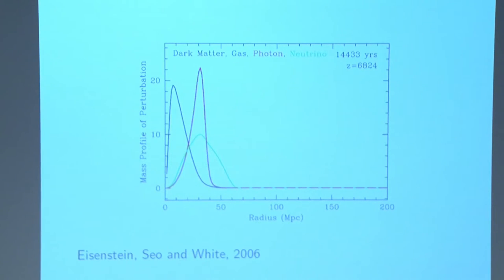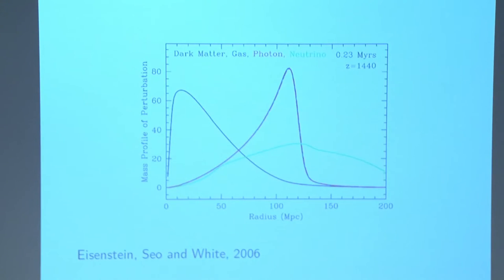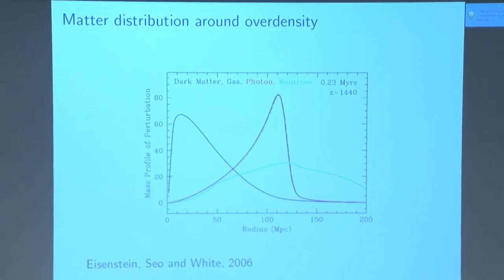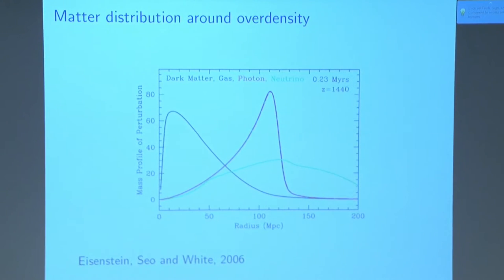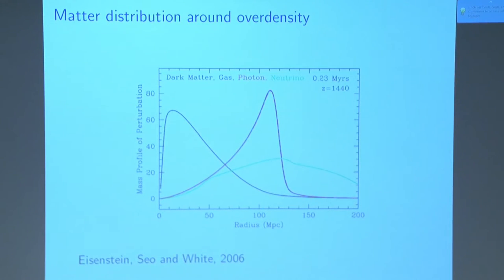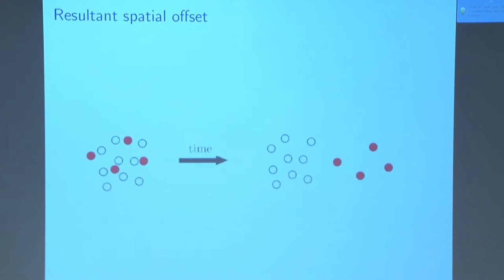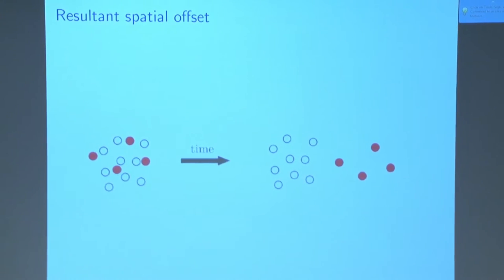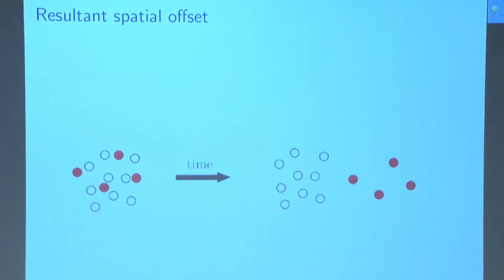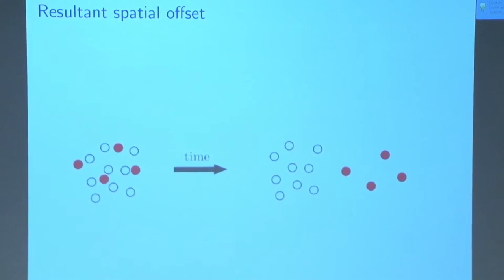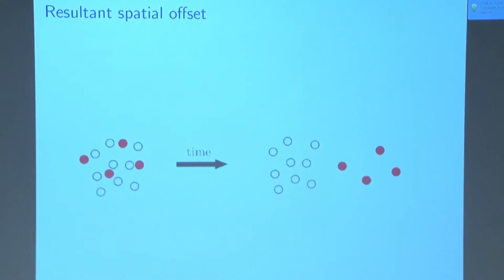If we think about this in terms of matter distribution and step forward in time, the gas — our baryons — and the photons are coupled together, moving outwards together. The dark matter is generally concentrated towards the initial over-density. So we get a spatial offset: the baryons and dark matter are moving apart. What we get left over is a bunch of baryons that don't have any dark matter. Doesn't that sound like a potential solution to the globular cluster problem?